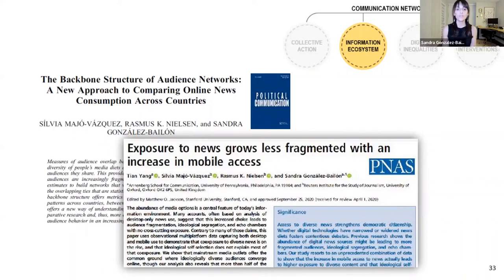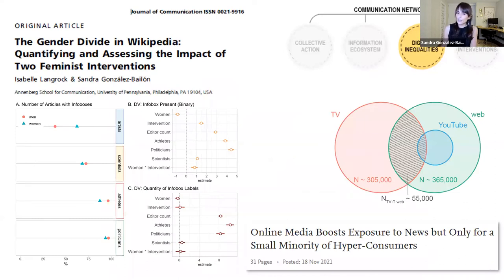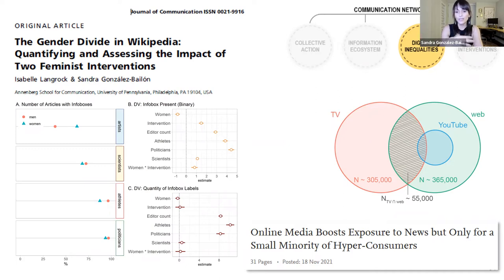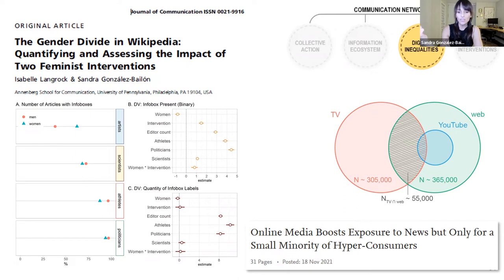Moving to the digital inequalities bucket: I recently published an article with Isabel Langrock, a PhD student at Annenberg, where we map gender bias in knowledge representation in Wikipedia even after feminist interventions try to alleviate existing gaps. The broader question is the downstream effects that bias in Wikipedia or other knowledge databases may have, especially since these databases are being used to train machine learning models or to power AI assistants. If there is a bias intrinsic to databases like Wikipedia, those biases will percolate through the rest of the technologies leveraging that database.